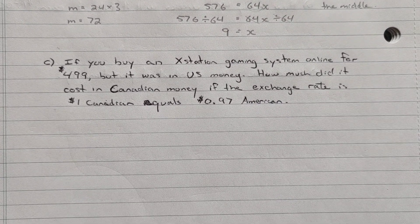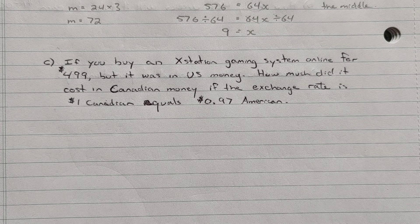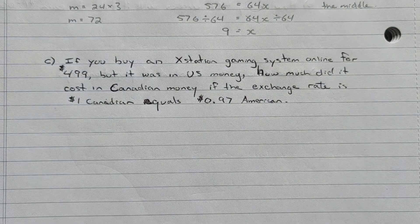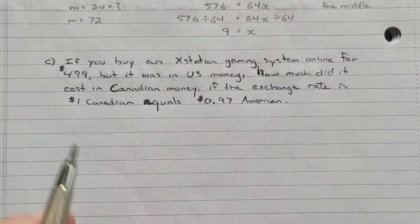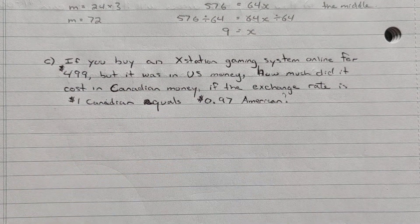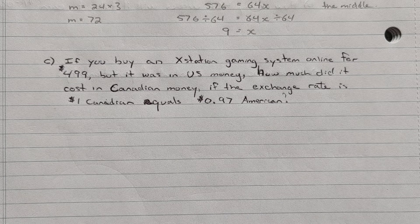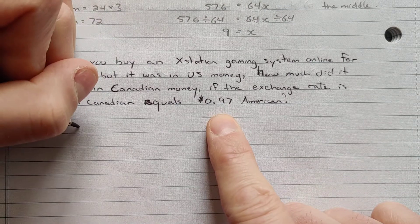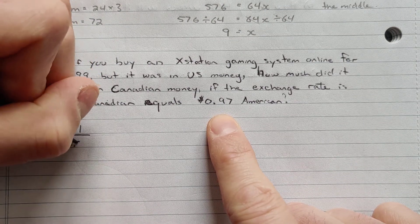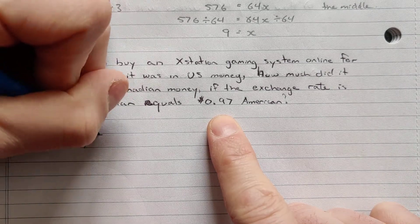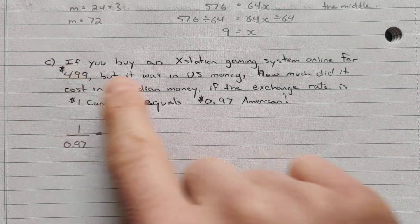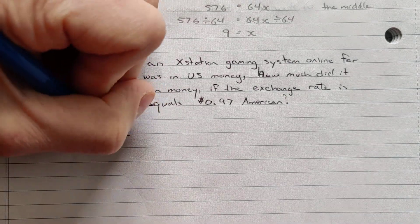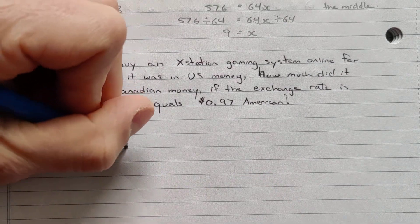So in this case here, if you buy an X-Station gaming system online for $499, but it was in US money, how much did it cost in Canadian money if the exchange rate is $1 Canadian equals 97 cents American? So we can set ourselves up a proportion here and compare these. So we have a rate of $1 Canadian is equal to 0.97 American.